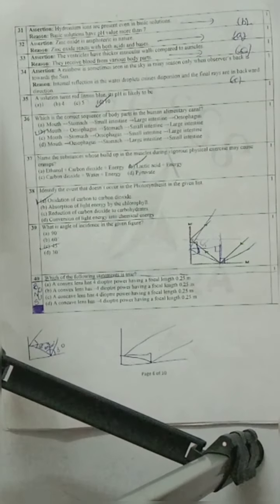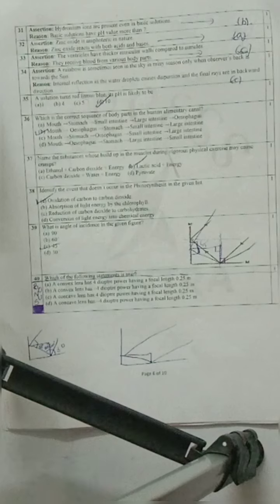Question 36: Which is the correct sequence of body parts in the human alimentary canal? First, we chew food and take it into the mouth. Then esophagus - esophagus is the food pipe. After esophagus, we take it to the stomach. After stomach, it goes to small intestine, then large intestine. So option B is your correct option. Esophagus here means food pipe.